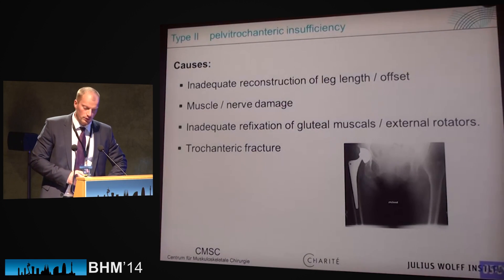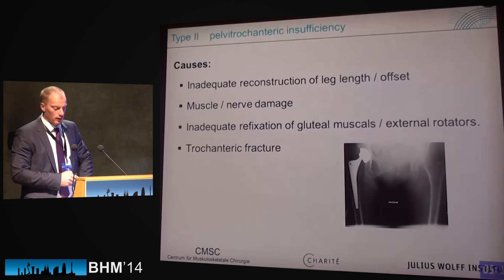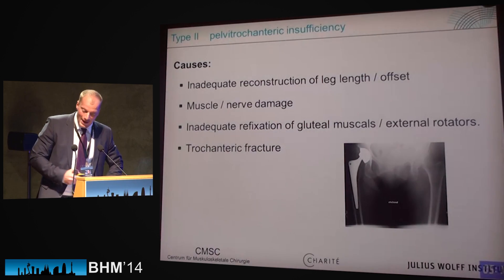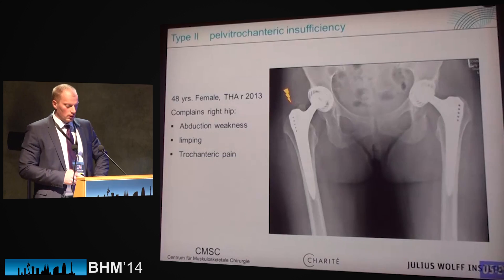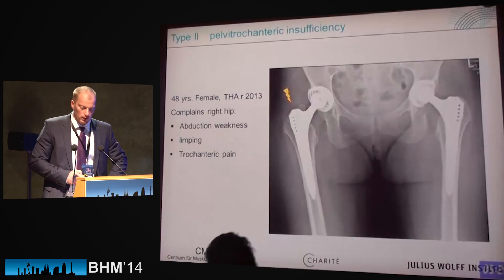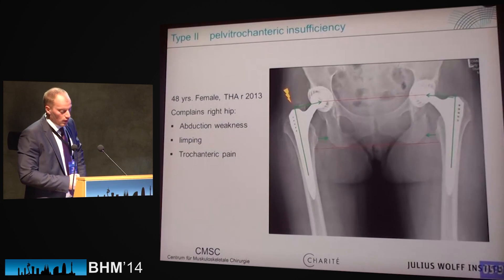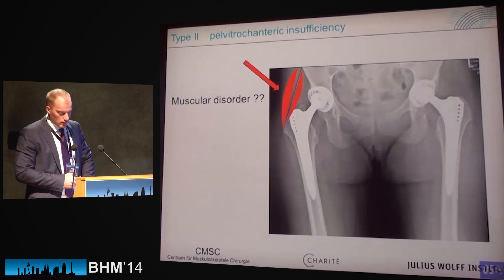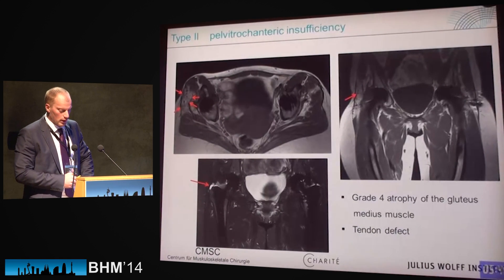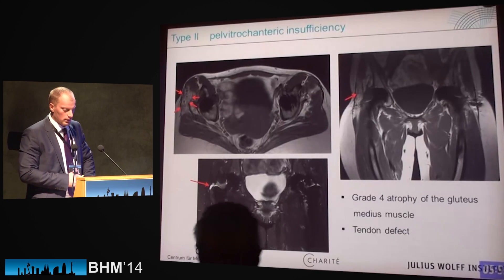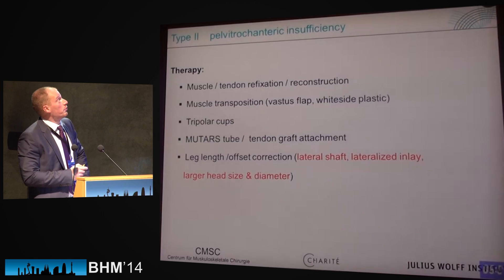For Type 2, pelvic-trochanteric insufficiency, causes include muscle problems, inadequate reconstruction of leg length and offset, inadequate refixation of gluteal muscles or external rotators, and trochanteric fracture. Here is an example: a 48-year-old female complaining of abductor weakness, limping, and trochanteric pain. Biomechanics look acceptable, but we have to consider the muscles. MRI revealed grade four atrophy of the gluteal muscle with a huge tendon defect, causing the dislocation or subluxation problems.